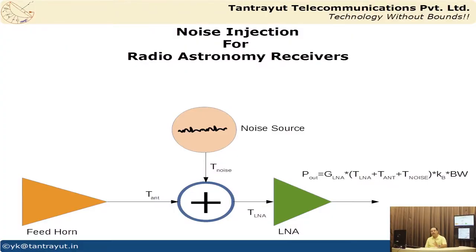This video covers the theoretical aspects of how to inject noise into your system, along with a practical demonstration with a realized noise source and how the noise switching is done. The noise must be added before the low noise amplifier, because as temperature varies and time elapses, the gain of the LNA might vary, the noise temperature or system temperature might drift, and you have to calibrate out all these drifting parameters during your observation.